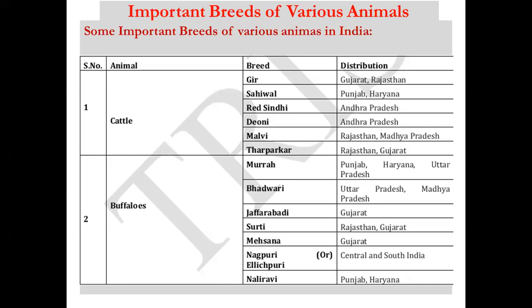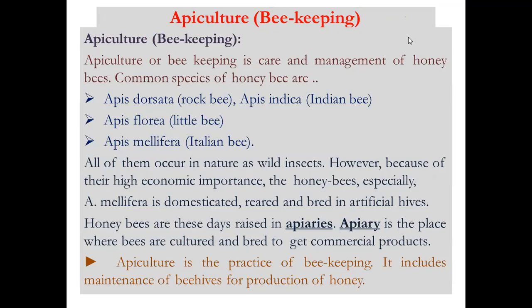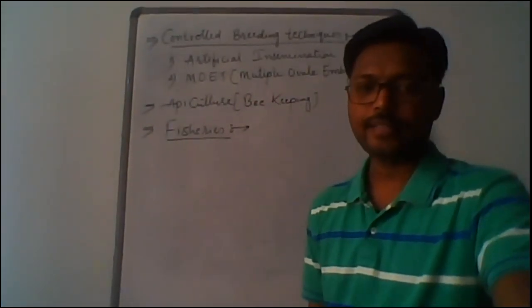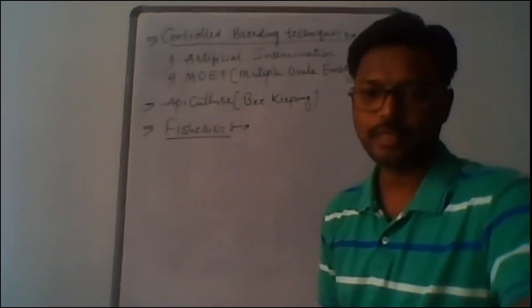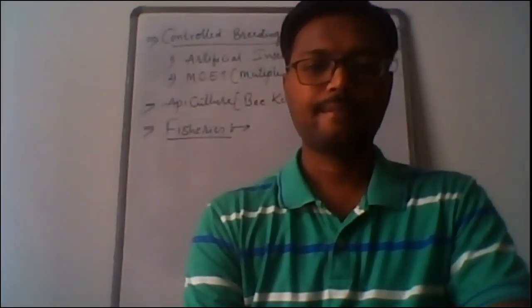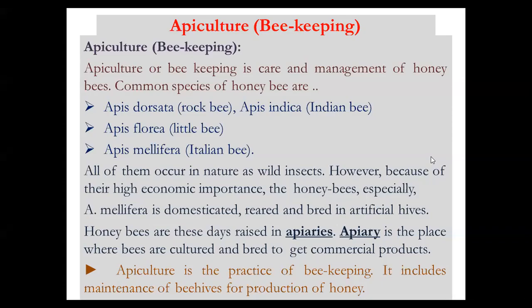These breeds are used in different parts of the world to produce improved progenies to obtain high quality meat and milk. Now we move to the next topic — Apiculture, also called beekeeping, which is an economically most important industry. Apiculture is the care and management of honeybees. The artificial rearing of honeybees is called beekeeping and the industry is called Apiculture, because the general name of bees is Apis.